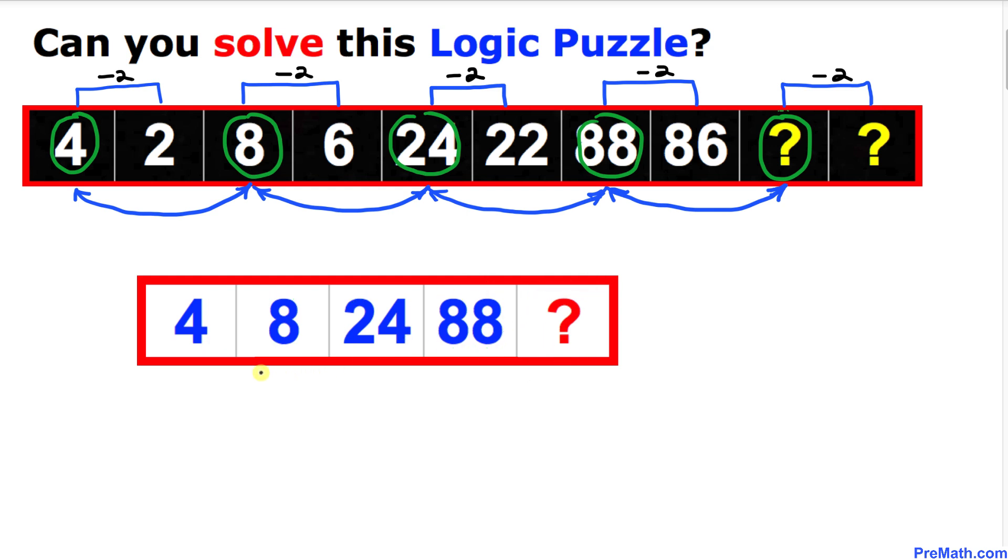And now let's focus on these numbers. As you can see, the difference between these two consecutive numbers is positive 4, and the difference between these two consecutive numbers is positive 16. The difference between these two consecutive numbers is positive 64.